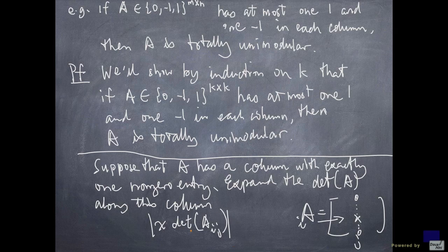Well, obviously, the determinant of this Aij is 0, 1 or minus 1 by induction hypothesis. That means the absolute value of the determinant of A is 0 or 1. And that's exactly what we wanted to prove. We'll see an example of how this is used in the next video.